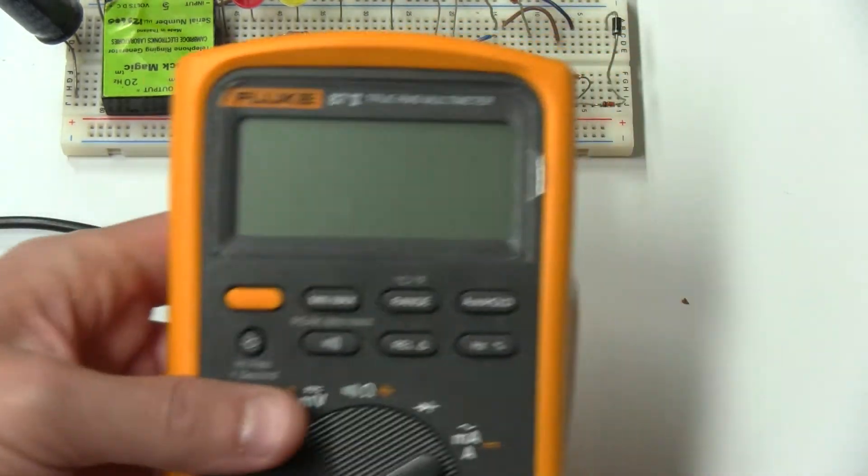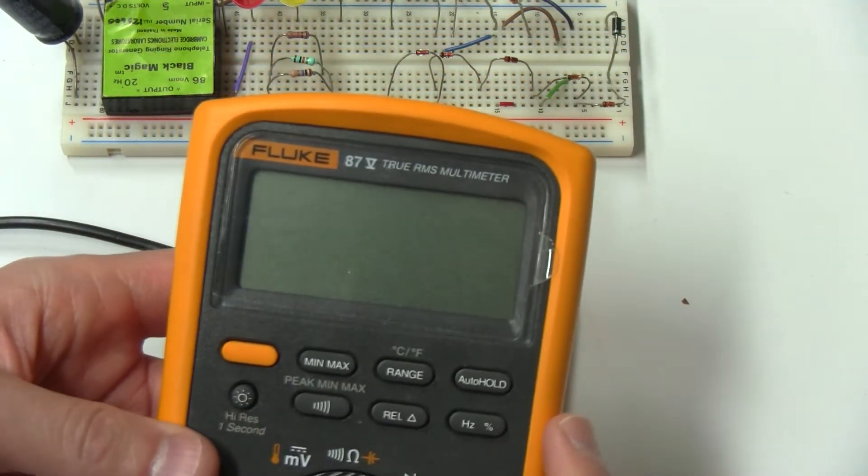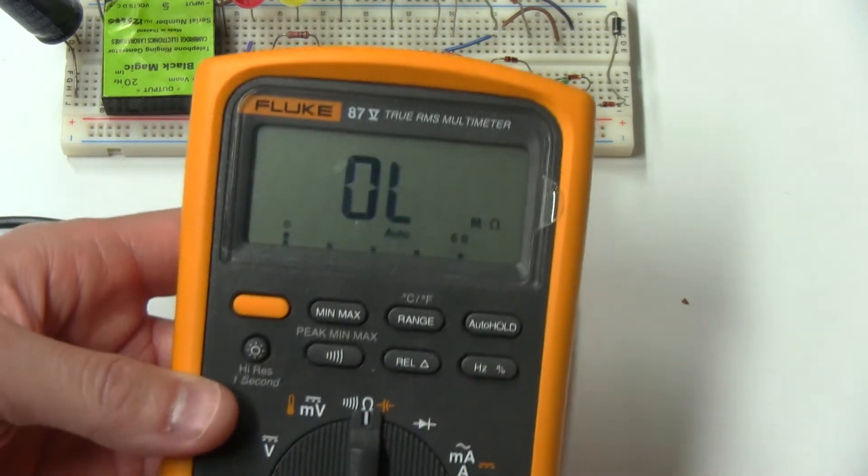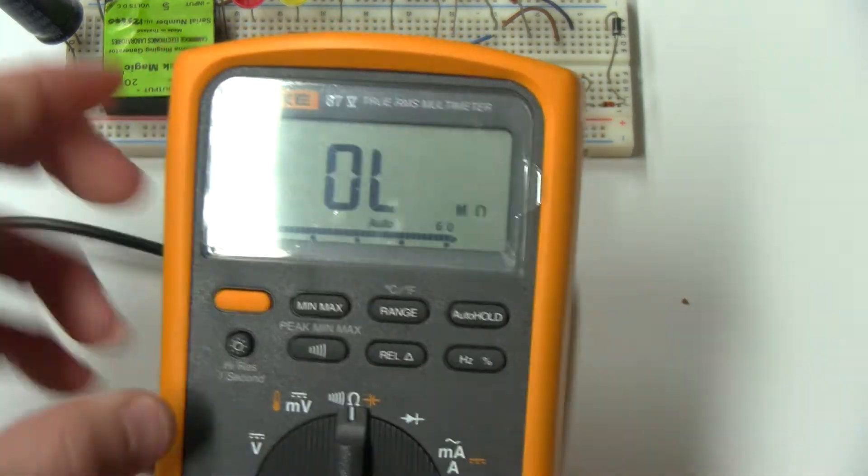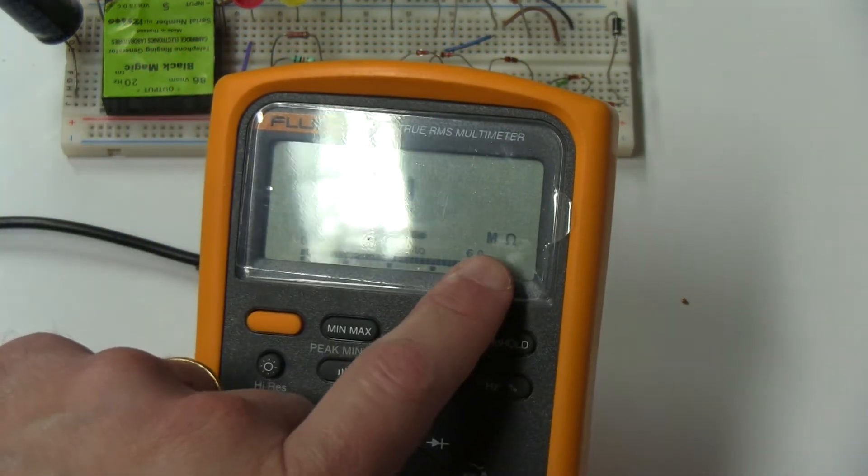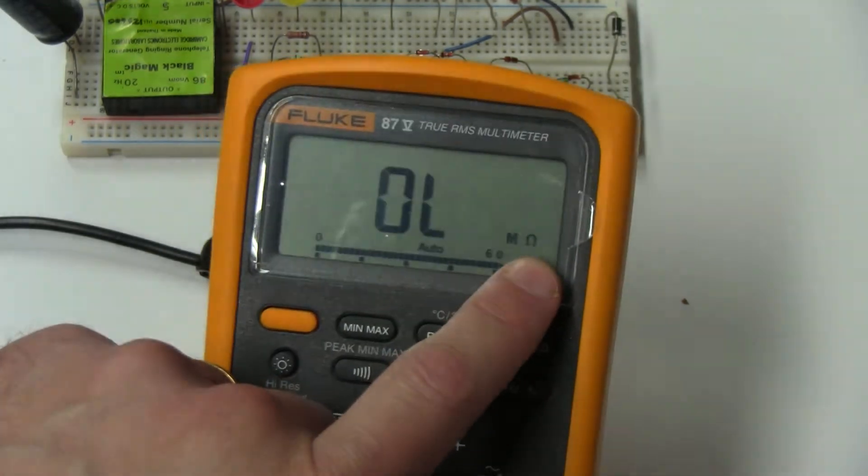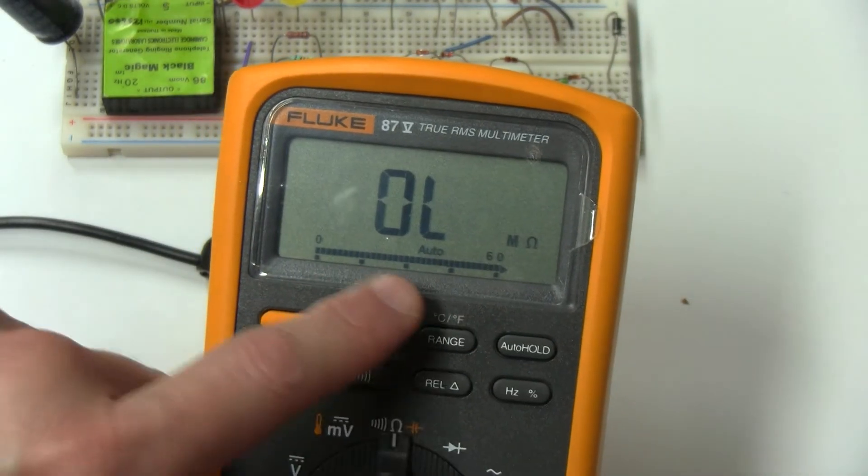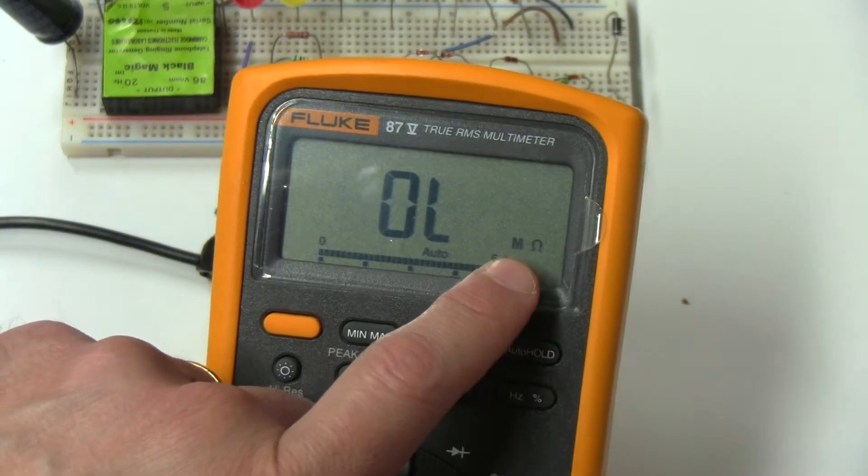With another meter, I can also attach some photos from meters around the internet. You see that this one has M and the ohms symbol.